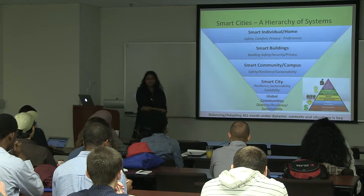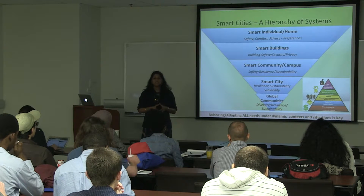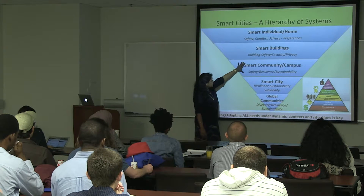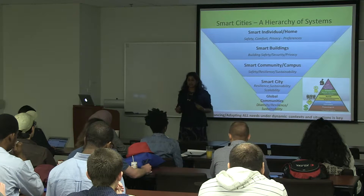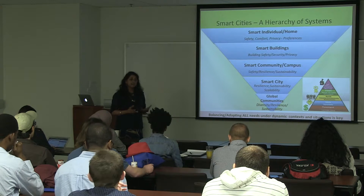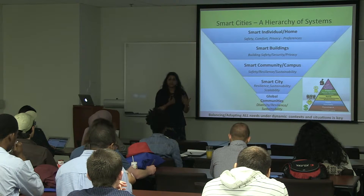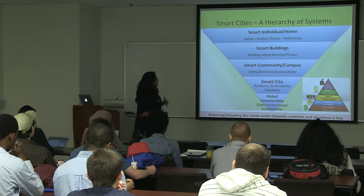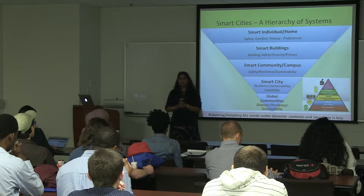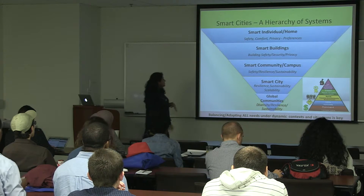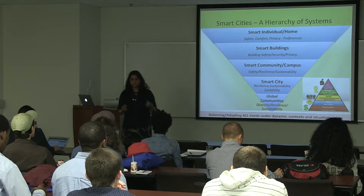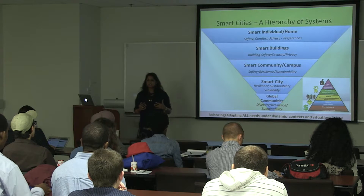Smart cities at the grassroots begin with an individual in a home, possibly part of a building at work or at home, part of a community or campus, which is part of a city. At each of these different levels, technologies impact us — for safety, for comfort. A senior citizen may have a pacemaker or heart rate monitor. A person driving on the freeway may need information about road congestion. We have projects at these different levels exploring how information and distributed systems play a role and where things can go wrong.